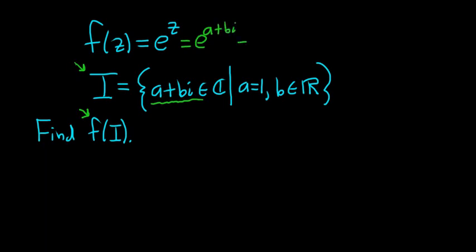And properties of exponents say we can write this as e to the a times e to the bi. Now we can use Euler's formula to write this as e to the a, and we can replace e to the bi with cosine b plus i sine b.